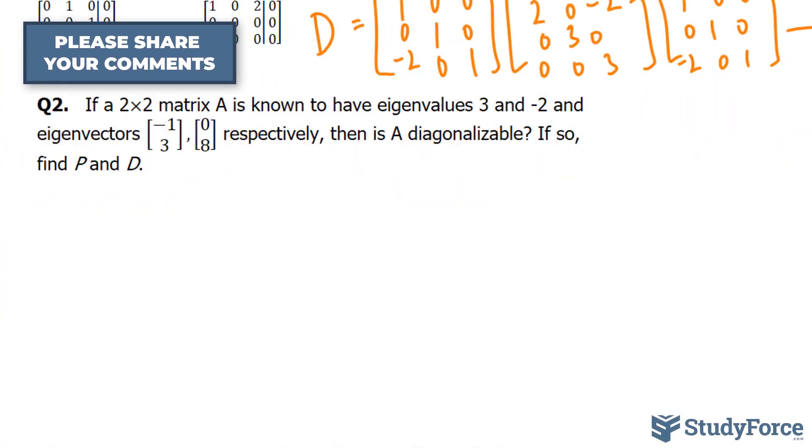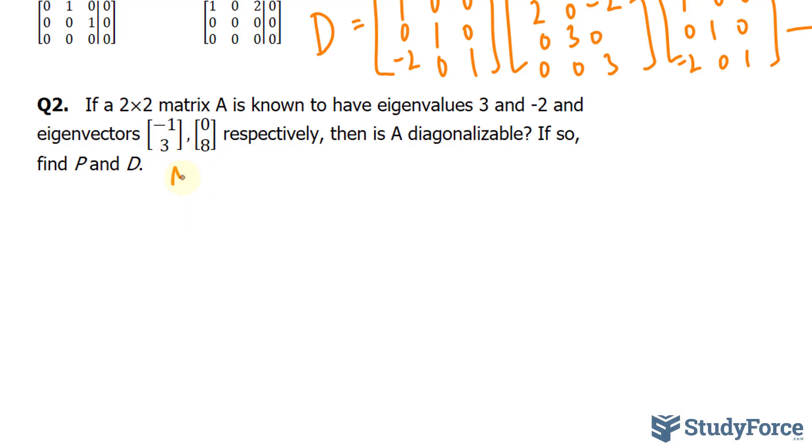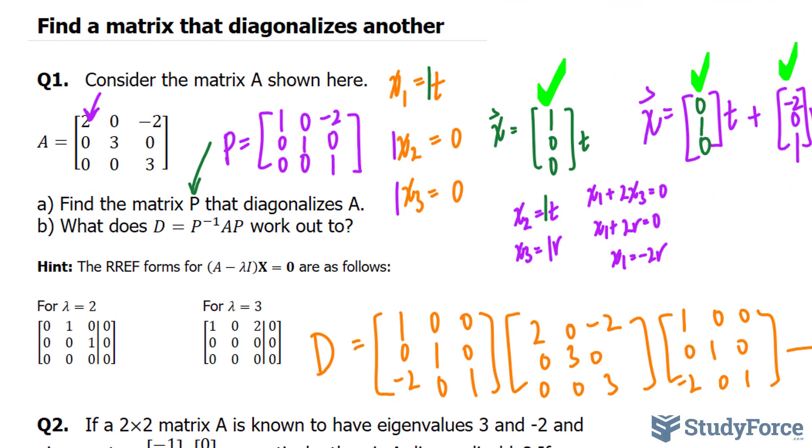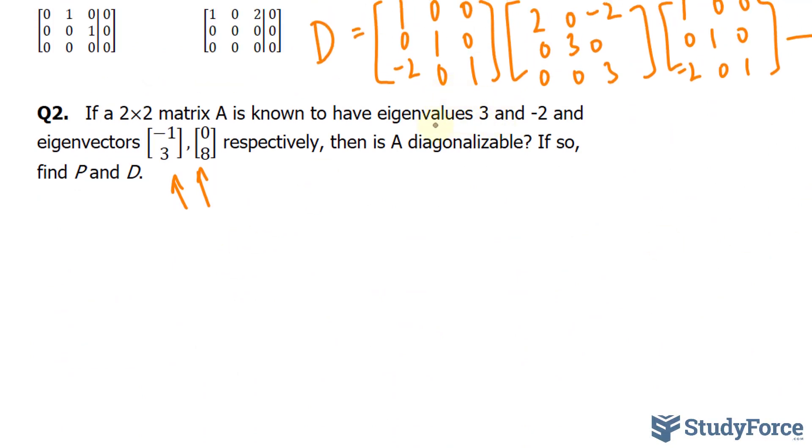If a 2x2 matrix A is known to have eigenvalues 3 and negative 2, and the eigenvectors are negative 1 and 3, and 0 and 8, respectively, then is A diagonalizable? If so, find P and D. This is really good. They give us the eigenvectors so we don't have to worry about all this extra stuff that we did up here.